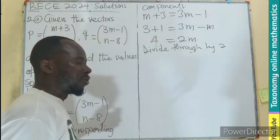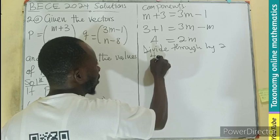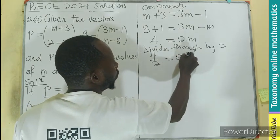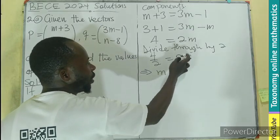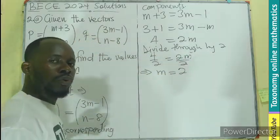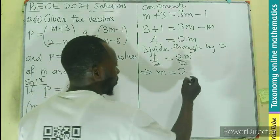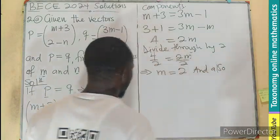We are dividing 2 by 2, which is the coefficient of the M there. That will give you 4 divided by 2, 2M divided by 2. Meaning M will be equal to, this will cancel, 4 divided by 2 gives you 2. And we can say that.